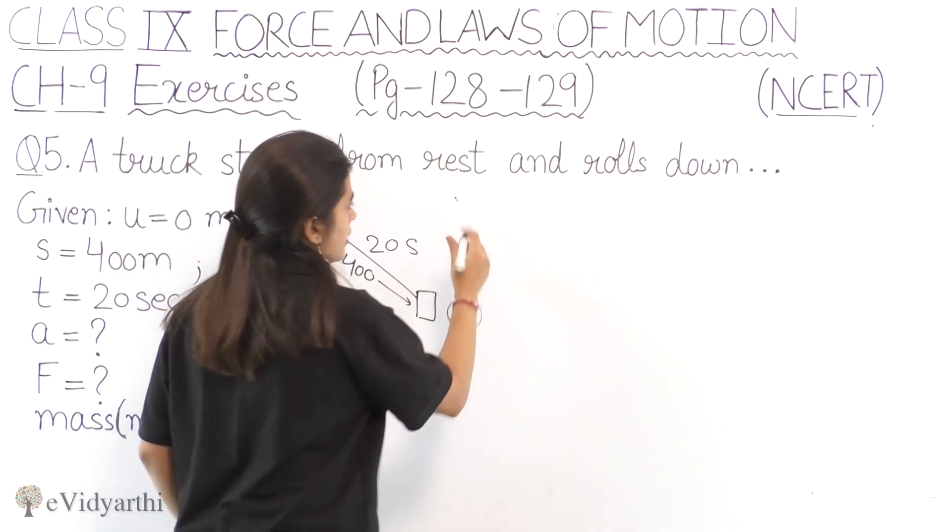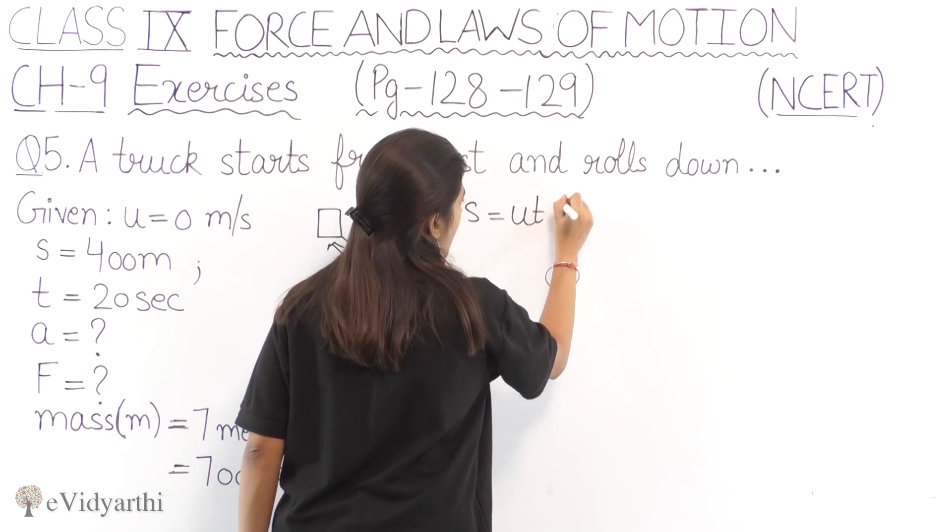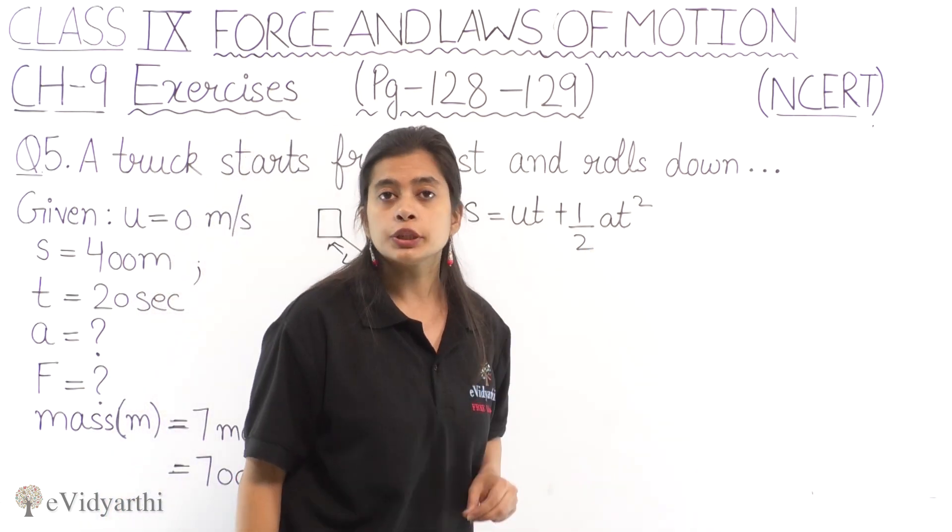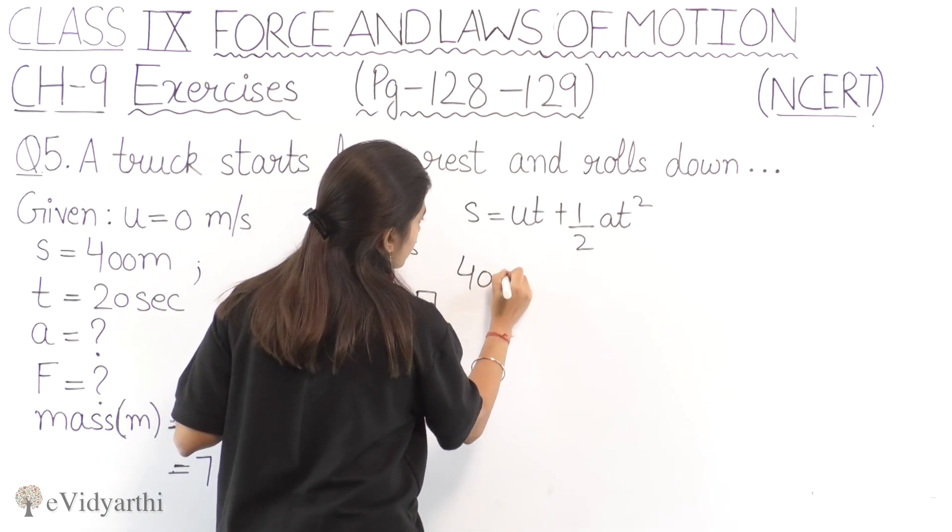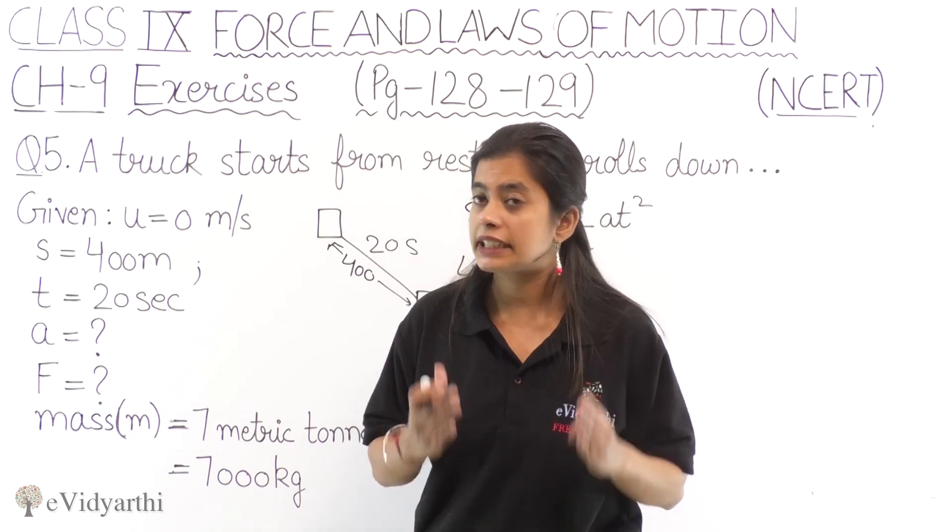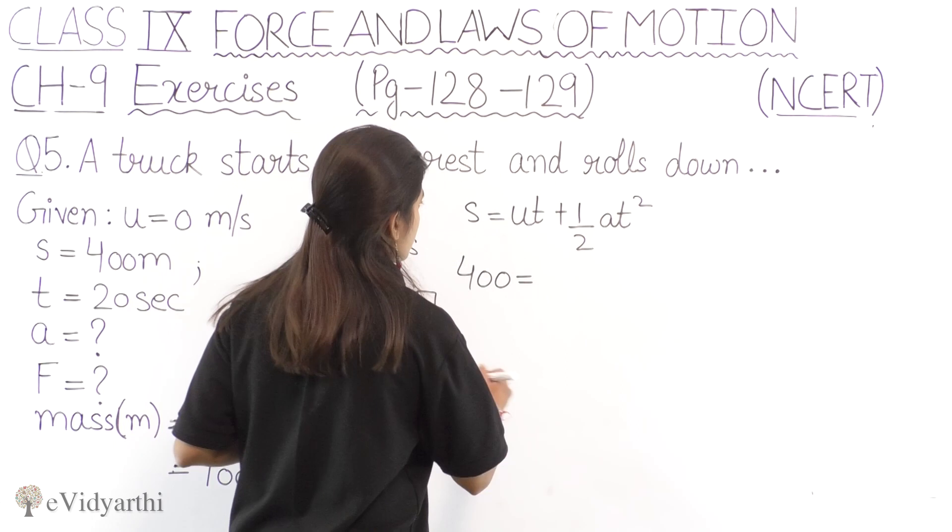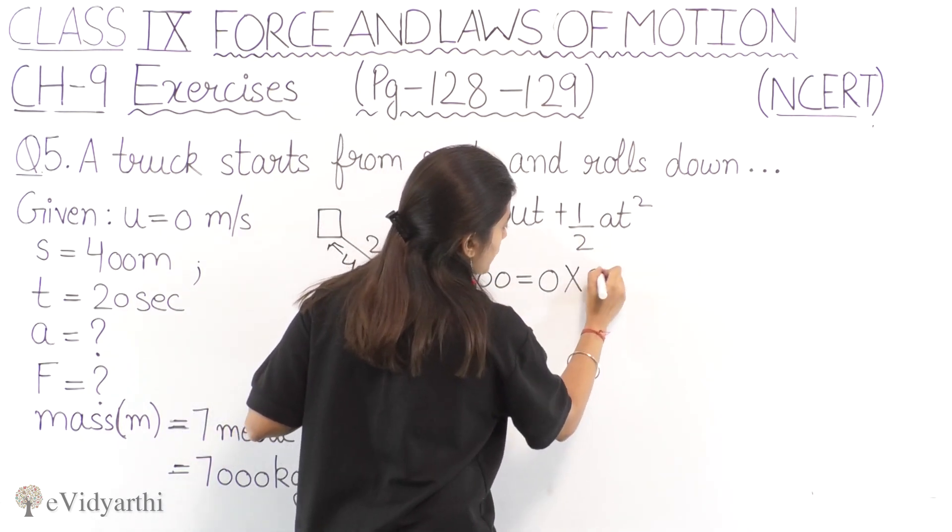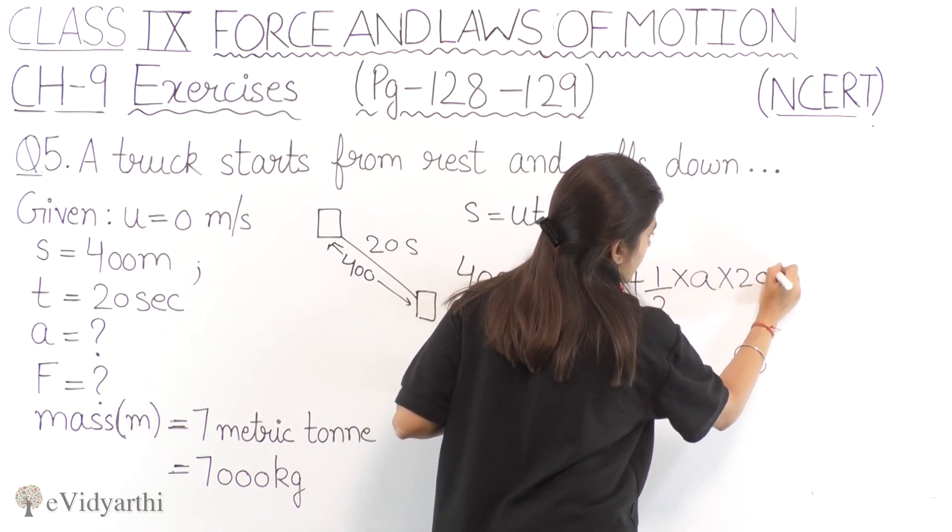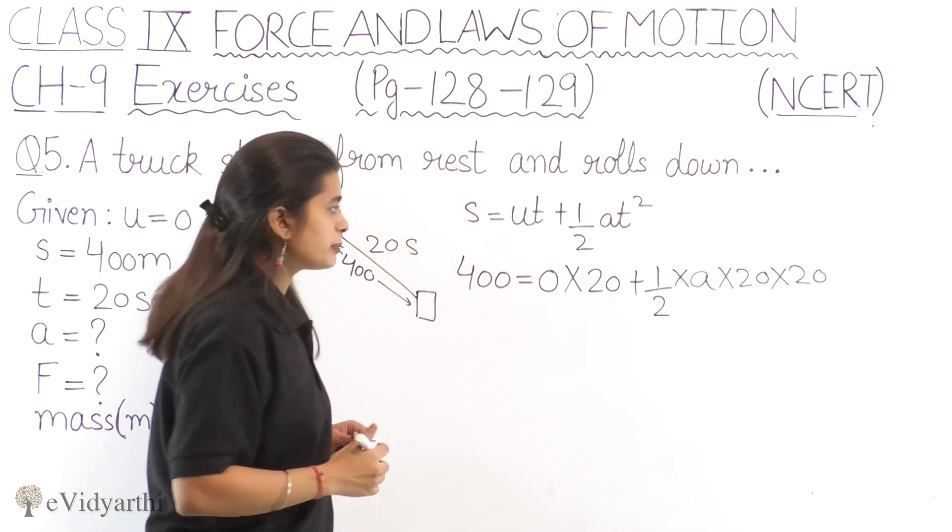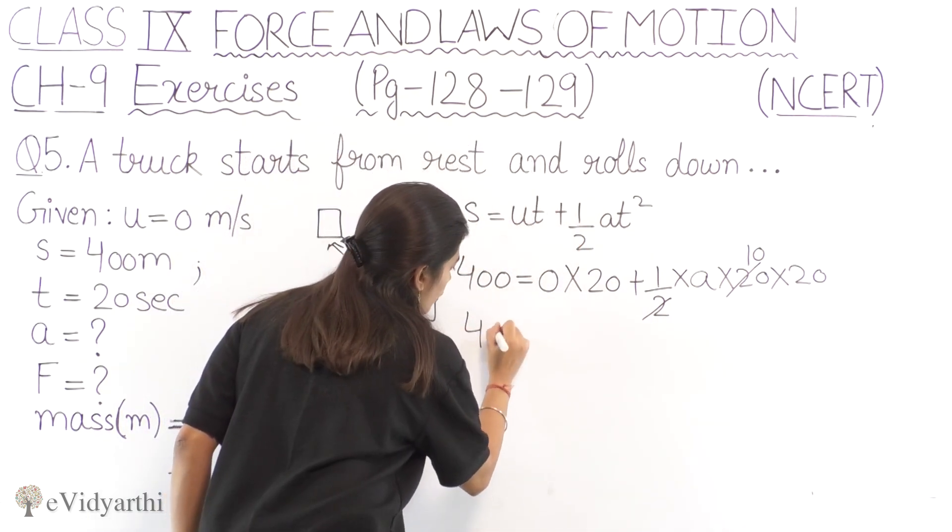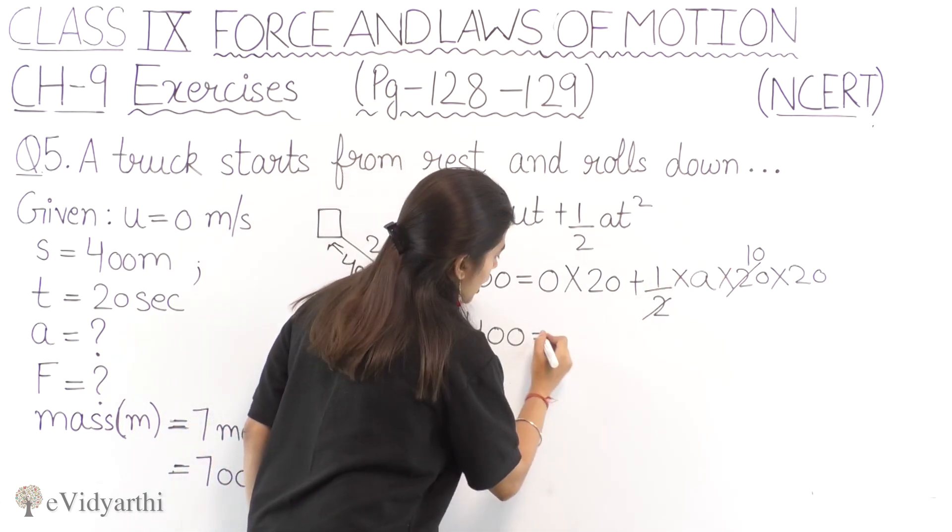So first what do we have to do, s equals ut plus half at square. Now let's put all values. We need to find out the acceleration. Our distance is 400 meters. The initial velocity, since our truck is starting from rest, the initial velocity should be 0 meter per second. So u is 0, t we have 20 seconds given, plus half multiply by a we need to find out, and then t square which is 20 into 20. So here if we simplify this, it would be 10, and this will be 0.